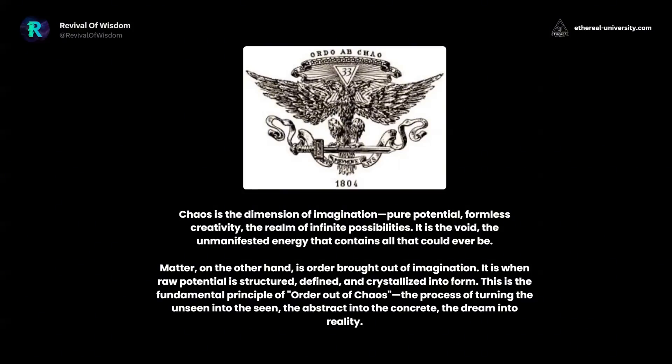The imagination is the dimension you are connected to, and you can pull any idea out of it and materialize it into reality. Matter, on the other hand, is order brought out of the imagination — chaos. It is when the raw potential is structured, defined, and crystallized into form. This is the fundamental principle of Order Out of Chaos — the process of turning the unseen into the seen, the abstract into the concrete, the dream into reality.